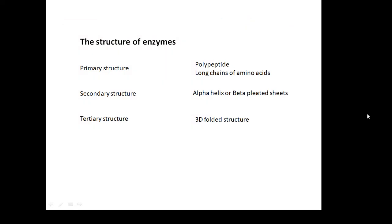The structure of enzymes: there's different levels of structure. The simplest level is called the primary structure, which is just the long chain of amino acids, the polypeptides we talked about in the last video. That's the simplest primary structure.